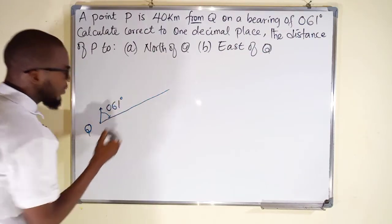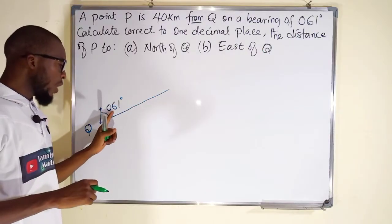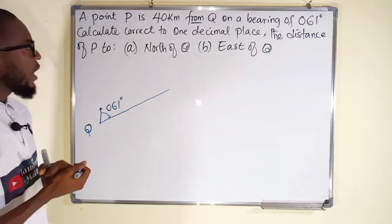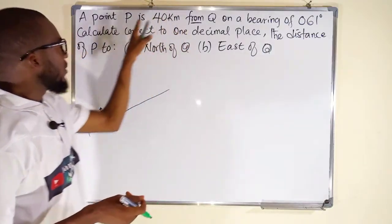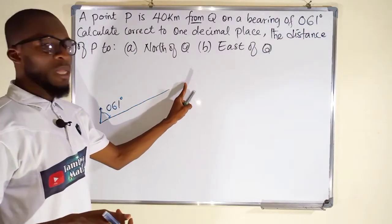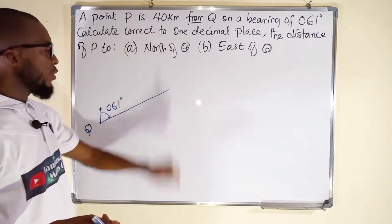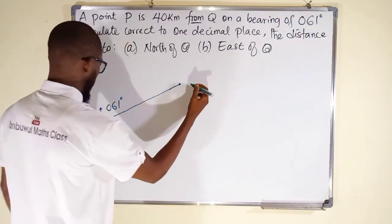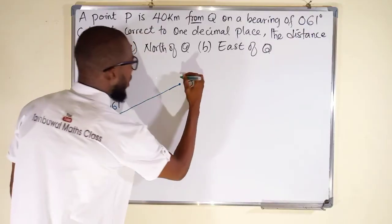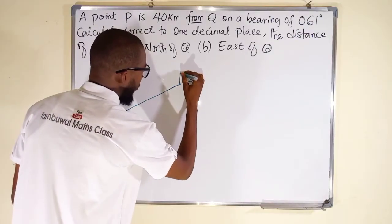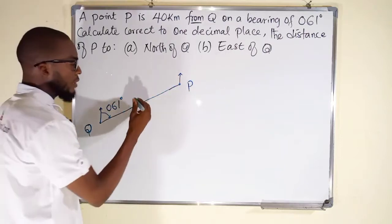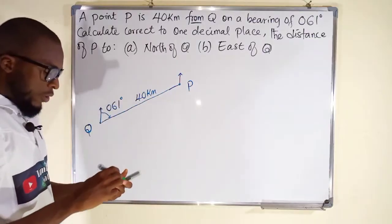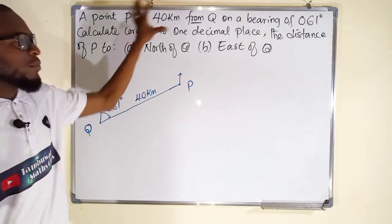Roughly, we have something like this. So this angle here, you have to attach an arrow showing that the angle is from the north to the line leading to point P. So this is 061 degrees. It is going to be in 3 figures. Once the angle is less than 100, you have to attach 0 behind. And we are told from the question that from this Q down to P is 40 kilometers.